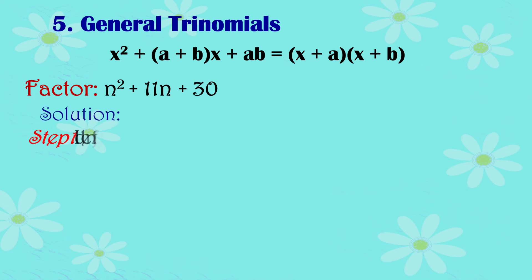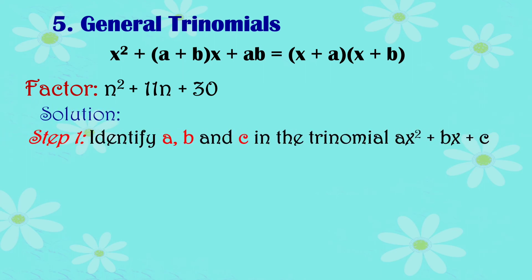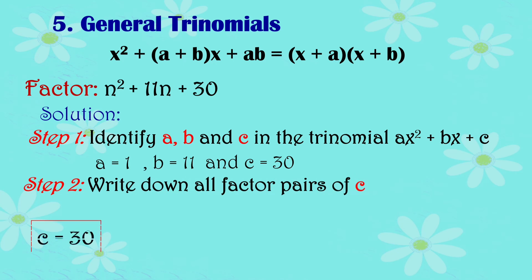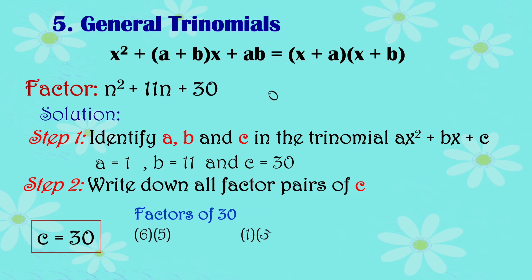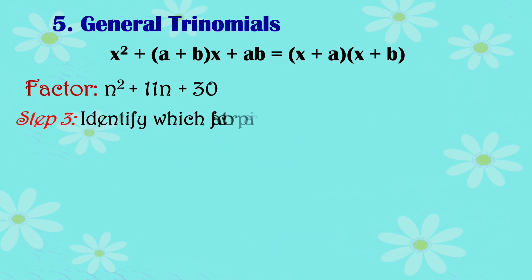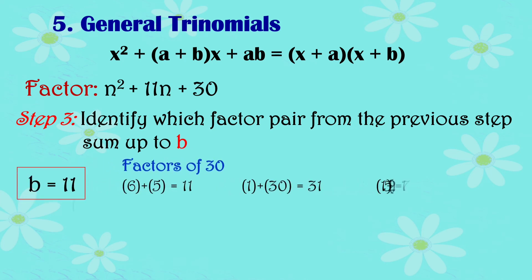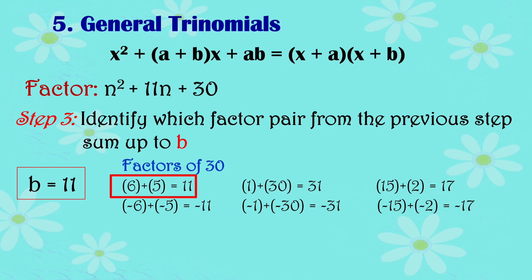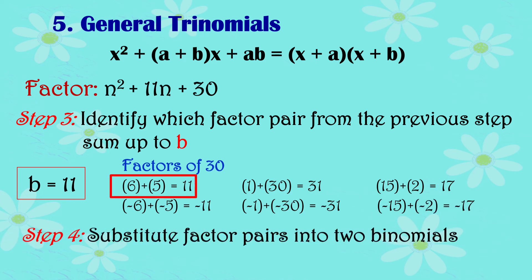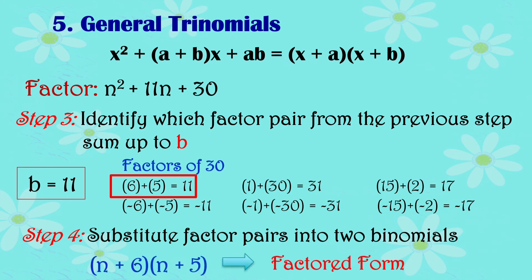You can also use this step-by-step method: identify a, b, and c in the trinomial; write down all factor pairs of c; identify which factor pair sums to b; then substitute the factor pair into two binomials to get your answer.